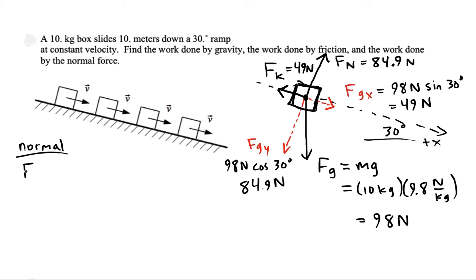The normal force will do a work given by Fn dot Δr. Well they're saying that the magnitude of Δr here is 10 meters, it all points in the x direction. So we get 84.9 newtons in the j direction dotted with 10 meters in the i direction.